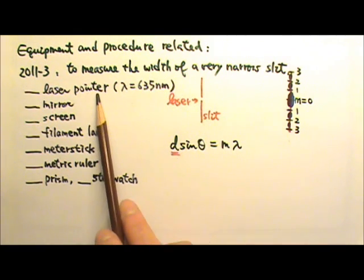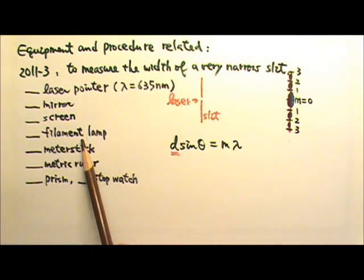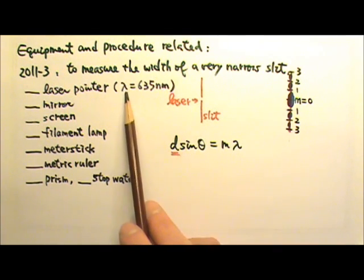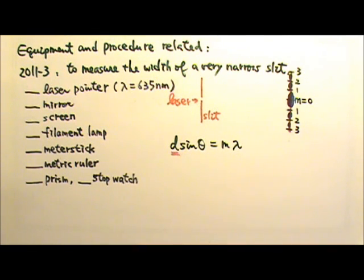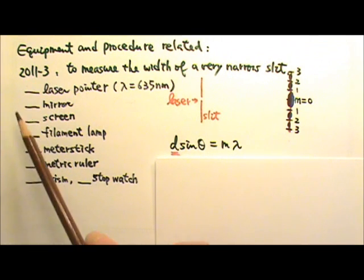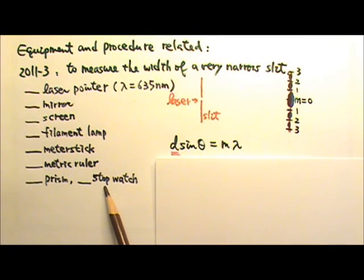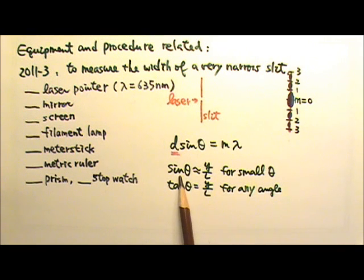If we choose the laser instead of the filament lamp, we would have the wavelength λ to plug in. There's nothing here that can be used to measure the angle θ directly. So we have to use sin θ that is Y over L for small angles, or use tan θ equals Y over L for any angle.